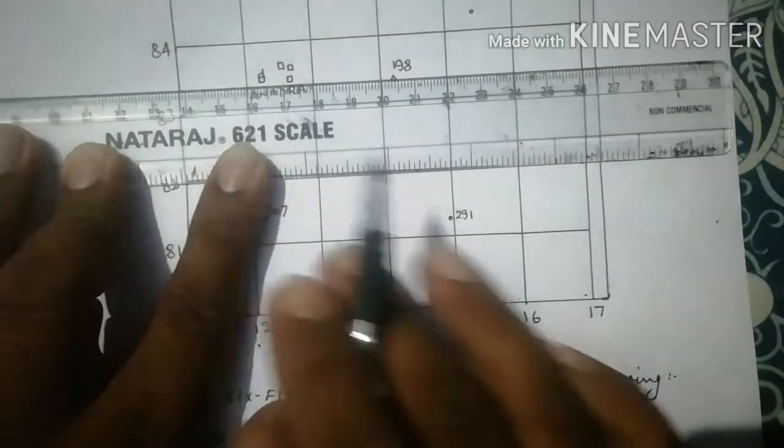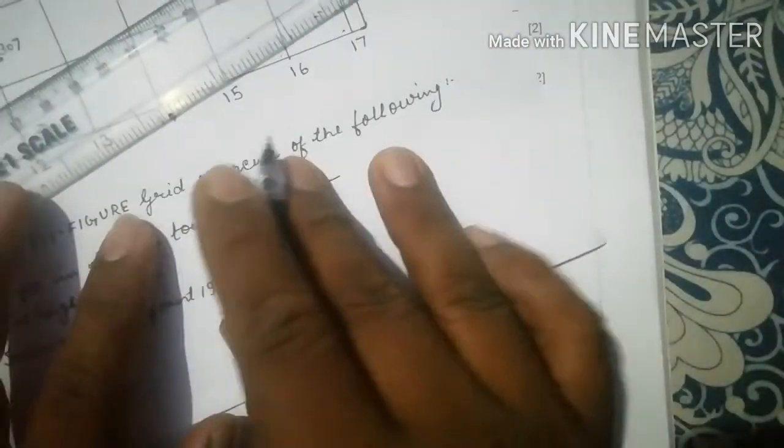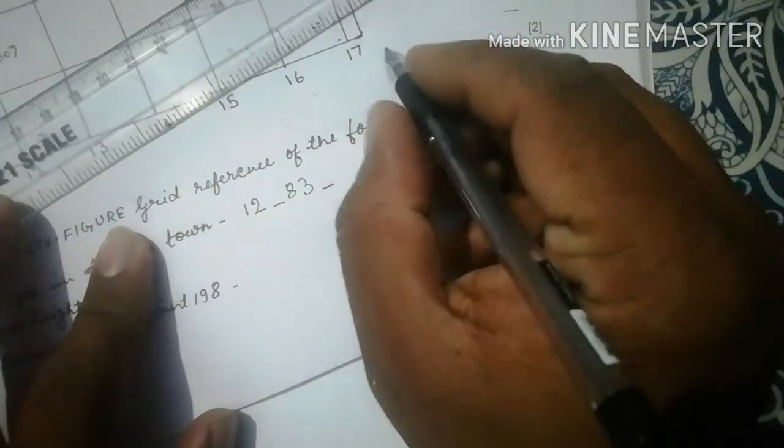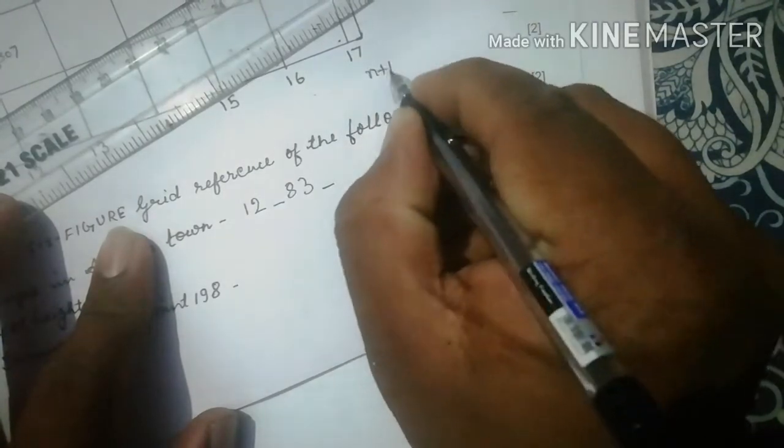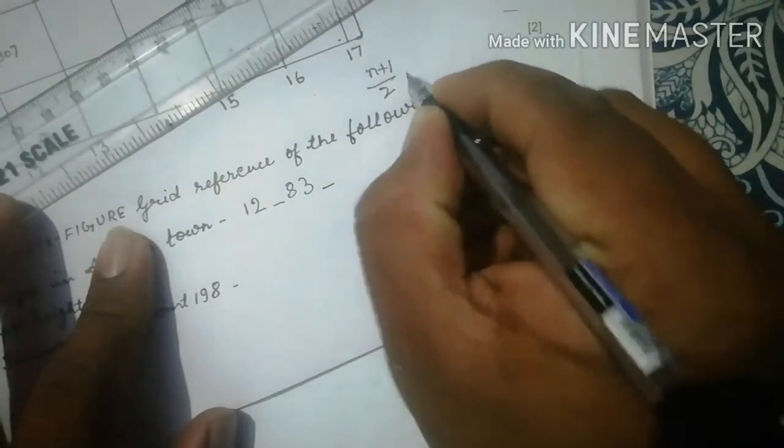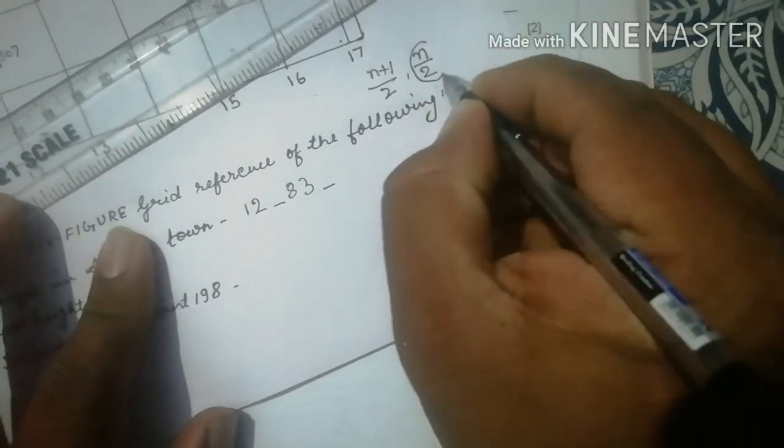I have told you there's a formula. For odd number the formula is n plus 1 by 2, and for even number the formula is n by 2. Now 4 is an even number, use this formula: 4 by 2, and ultimately you will get the third figure as 2.